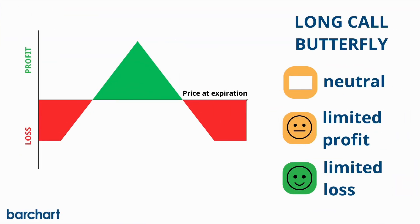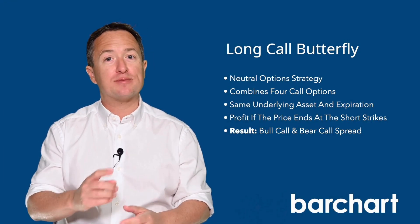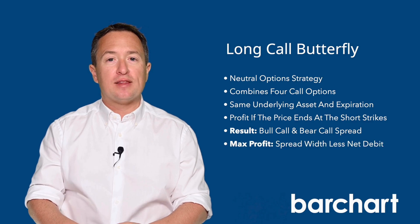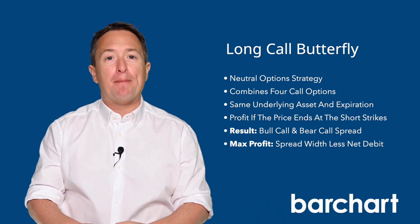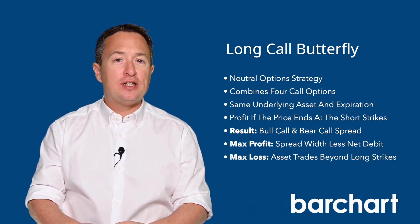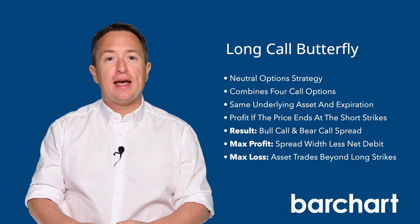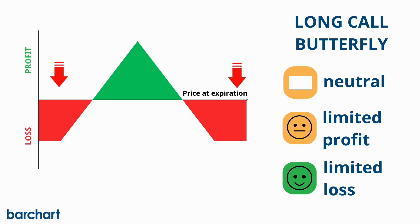The goal of the long call butterfly is for the underlying asset's price to trade at exactly the middle strike price at expiration. If that happens, you'll achieve maximum profit when the options settle. The maximum profit is the difference between the middle strike and either of the outer strike prices, minus the net debit. The maximum loss is limited to the net debit paid at the start of the trade, and happens if the asset's price at expiration trades below the lowest strike price or above the highest strike price.